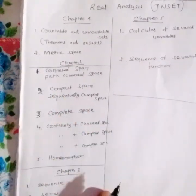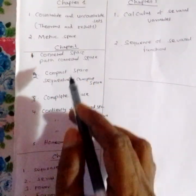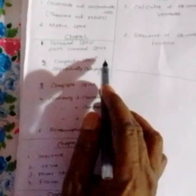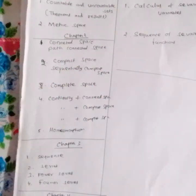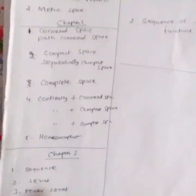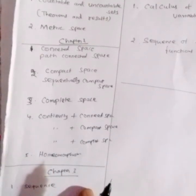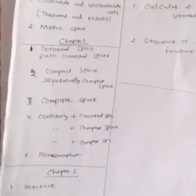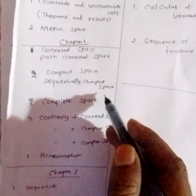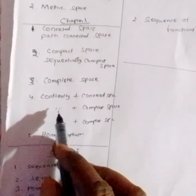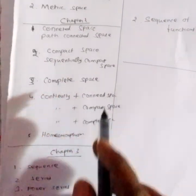In this case, we can do that. The metric function includes connected space, path connected, topological, connected space, compact space — connected and bounded — compact space, general compact space, sequentially compact space, complete space, and continuity.